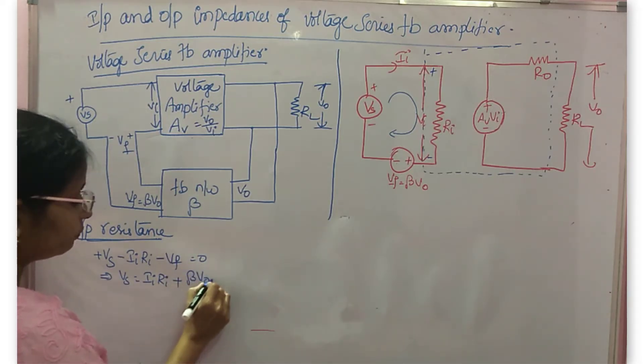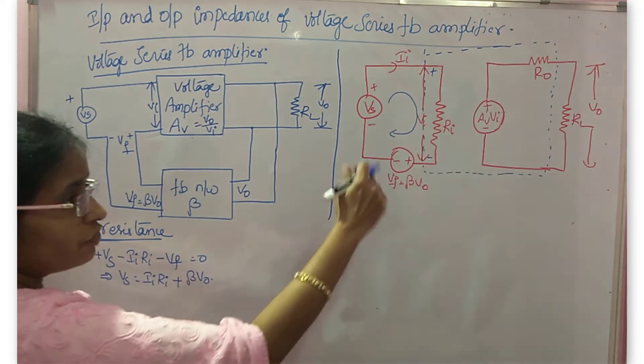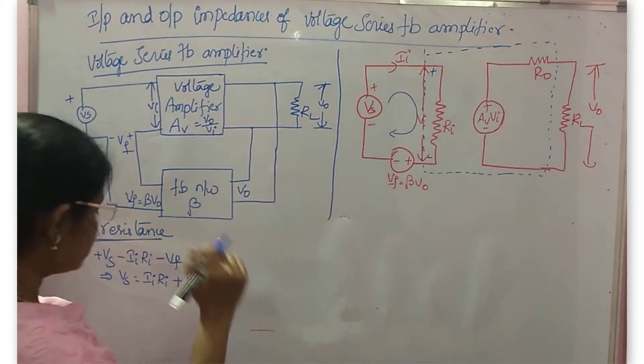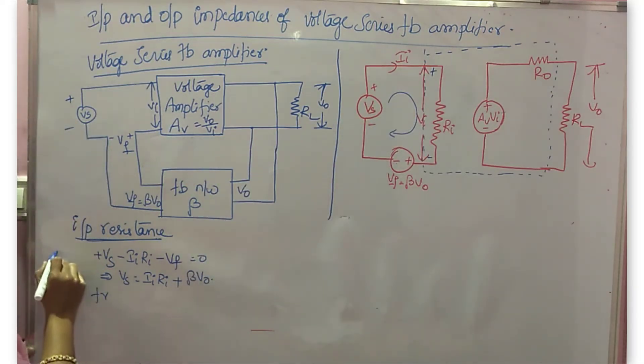So it implies Vs is equal to Ii·Ri plus Vf, and what is Vf? Beta·V0. So now from the output side, you write what is V0. This is the input KVL.